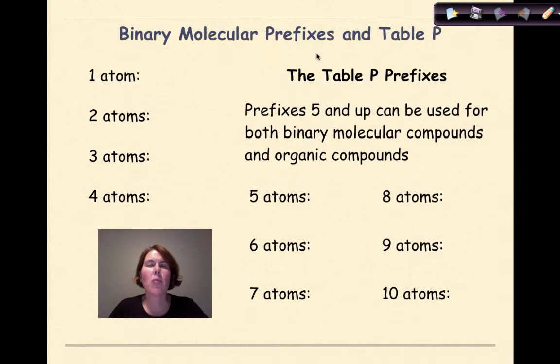So let's talk about the binary molecular prefixes that you're going to use to name these compounds, and the use of table P to help you a little bit. So for numbers 1 through 4, these you have to memorize. These are not on your reference tables, but many of them you're already familiar with. So if you have a compound that has only one atom of a certain element, we're going to use the prefix MONO.